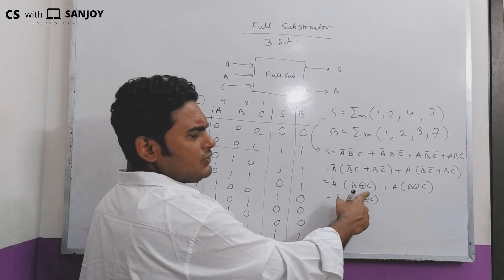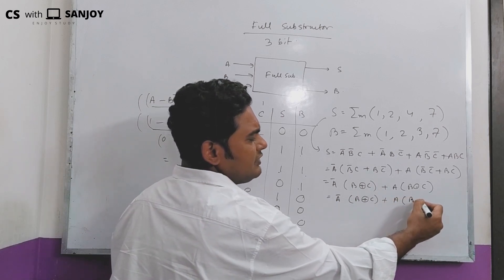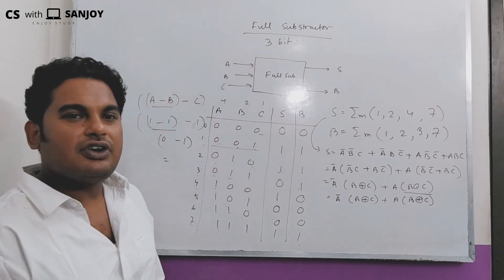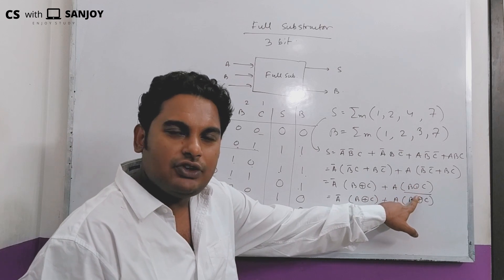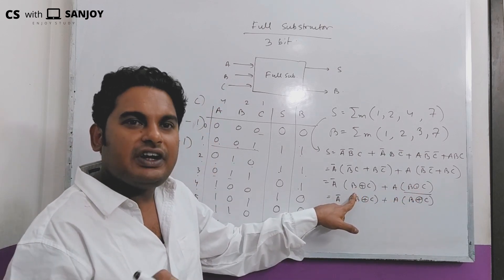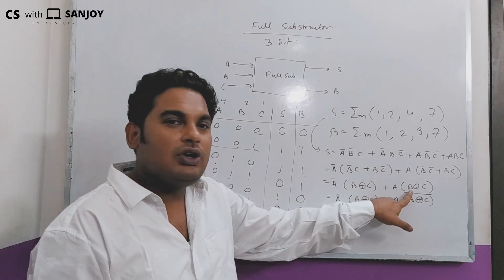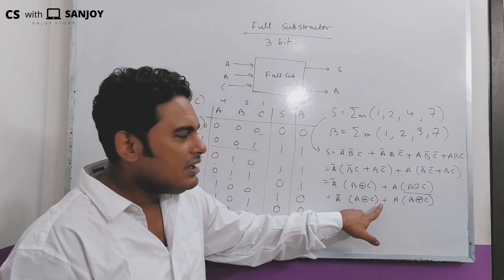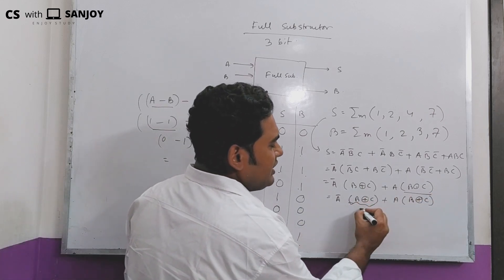It's very easy: B exclusive-OR C. And for the borrow, we want B exclusive-OR C bar. So if you write the full expression using exclusive-OR: equality checking gives different = 1, and exclusive-OR equality checking same = 0. So the difference is A XOR (B exclusive-OR C), plus A times (B exclusive-OR C bar).